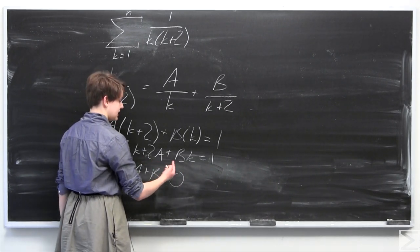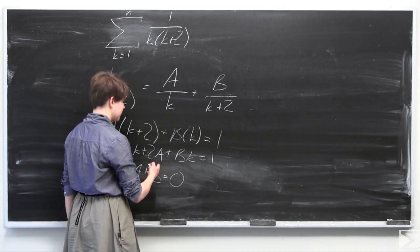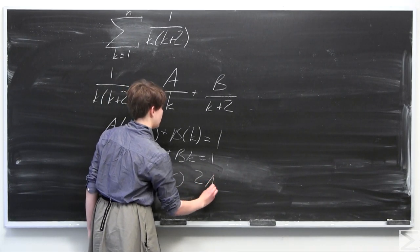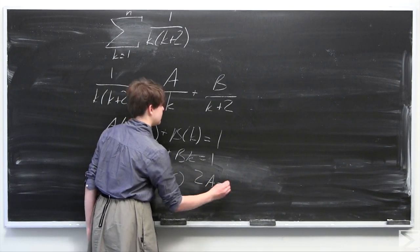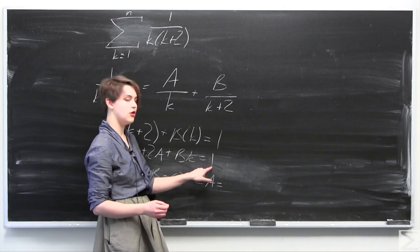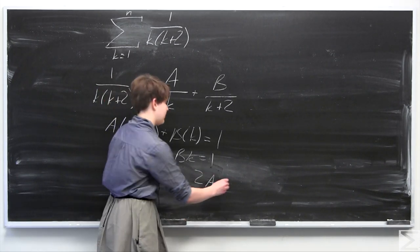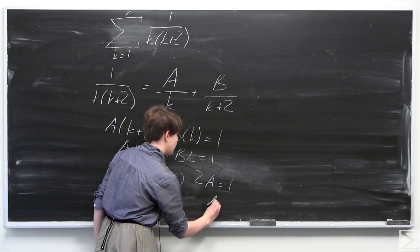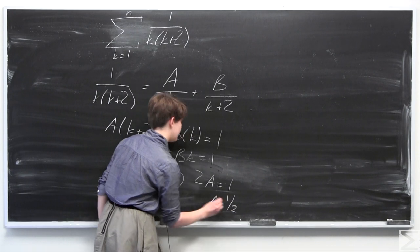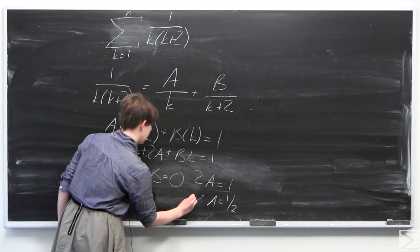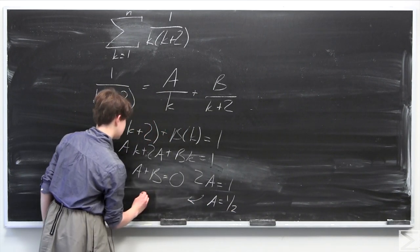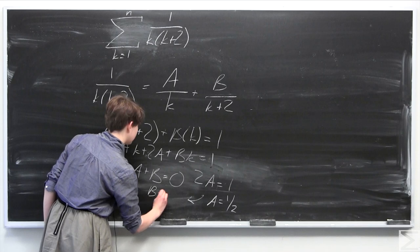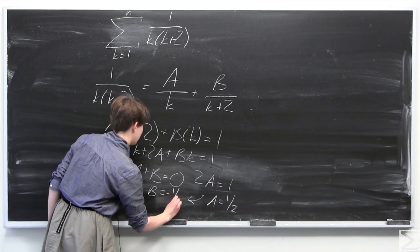Taking the constant terms — the terms without a k — we have 2a equals 1, so a equals 1 half.